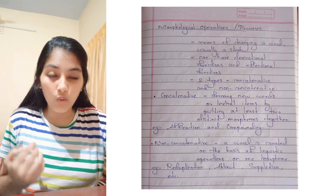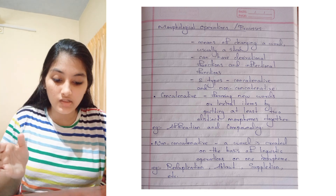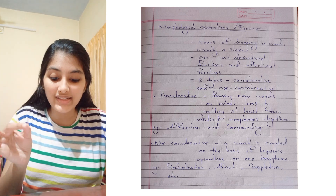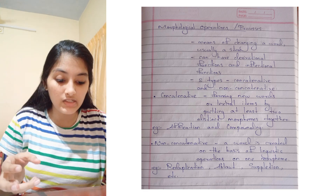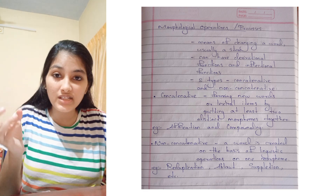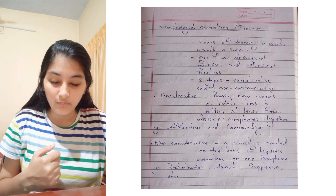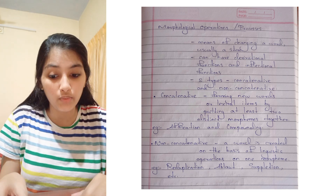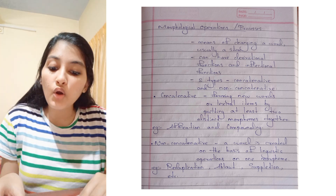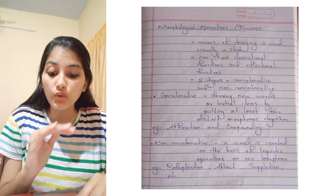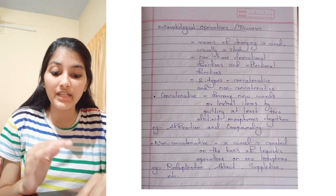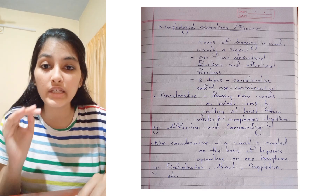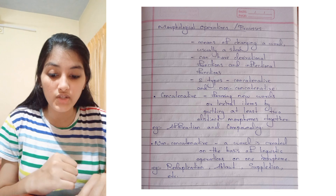Concatenative, meaning 'having contact,' refers to forming new words or lexical items by putting at least two distinct morphemes together. Examples include affixation and compounding.